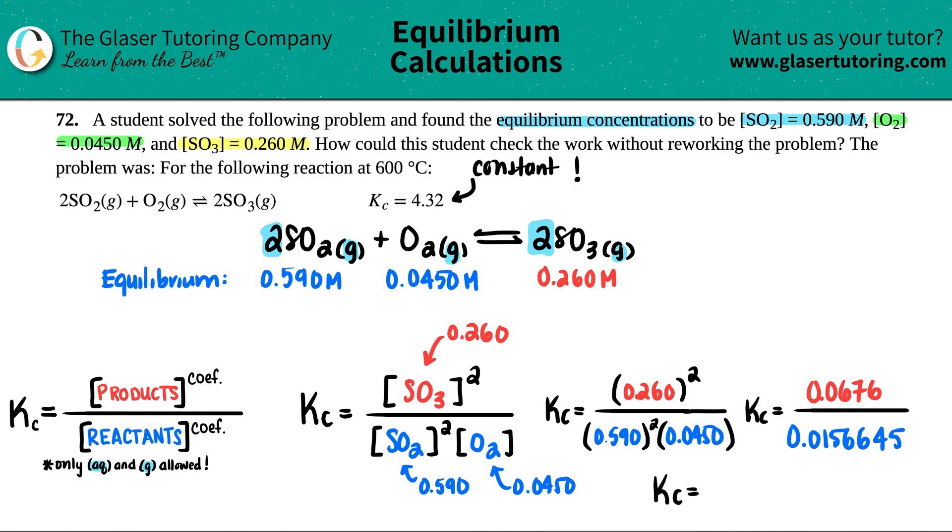And now let's just see what that Kc value is. So this number divided by this number, and I get 4.32 if we're rounding. And look at that, it checks out!